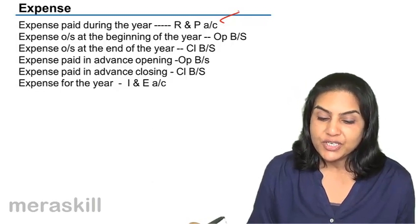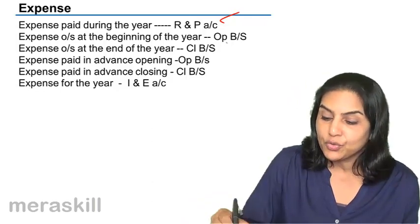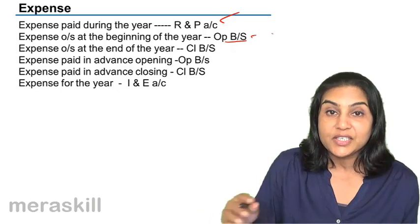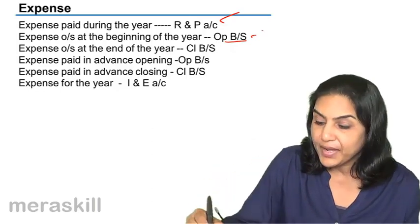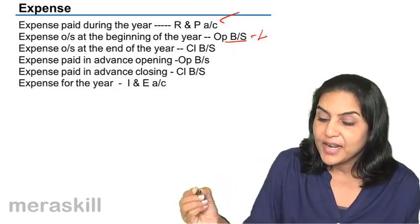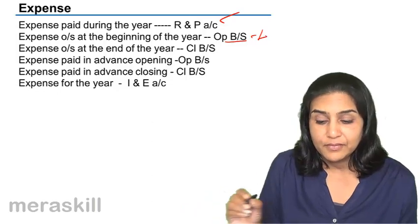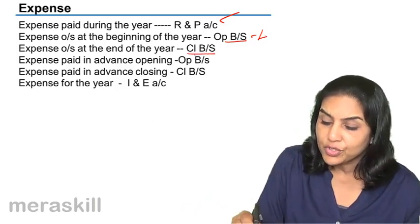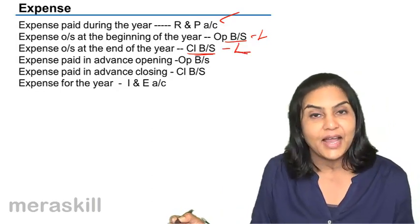The expense which is outstanding at the beginning of the year will go to the opening balance sheet. It is outstanding — we had to pay but we did not pay — so this is a liability. Expense which is outstanding at the end of the year will go to the closing balance sheet, and it is also a liability.